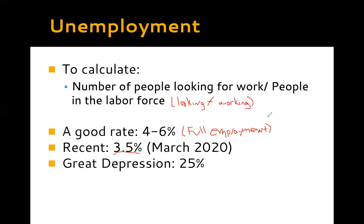If unemployment is between four and six percent, that means somewhere between 94 and 96 percent of people have jobs. When we say a low unemployment rate, we're talking about the percentage of people in the labor force who don't have a job — four to six percent, not forty-six. That's considered full employment.